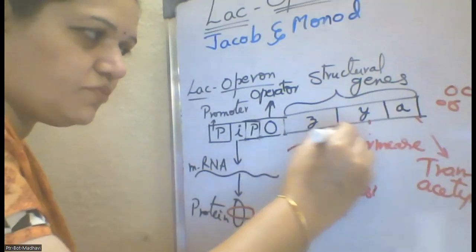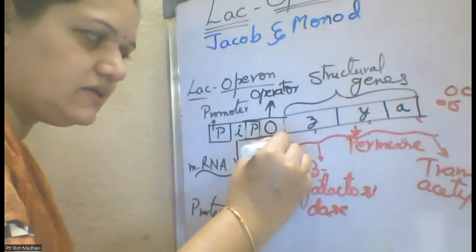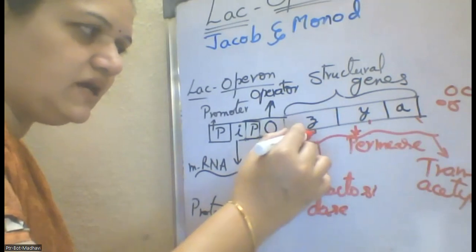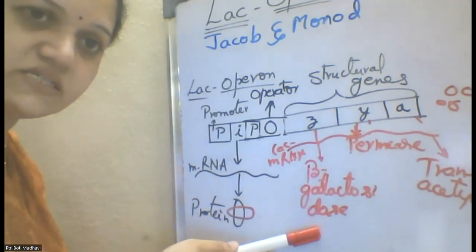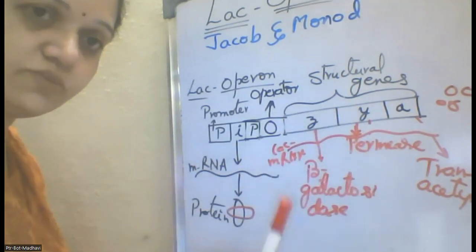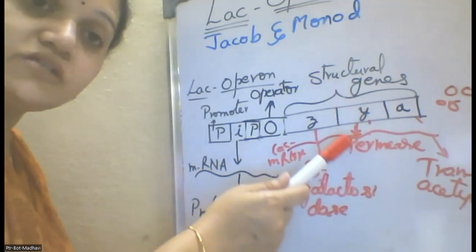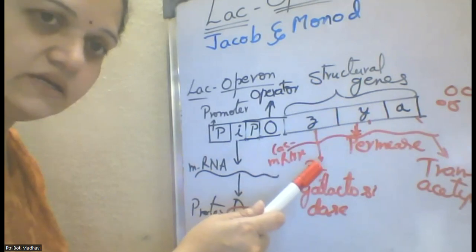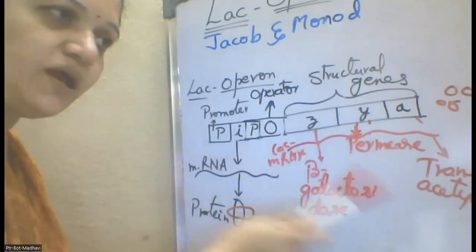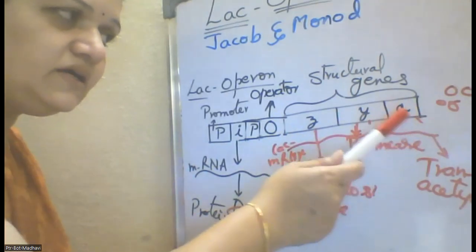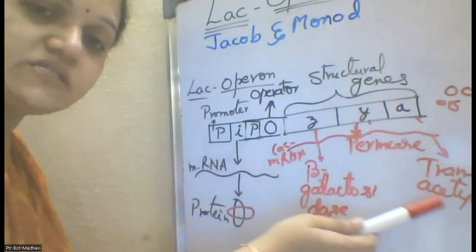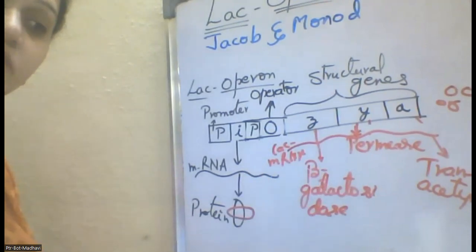Lac mRNA is formed through the transcription process. This lac mRNA will be synthesizing different enzymes. The structural gene Z synthesizes beta-galactosidase enzyme, which converts disaccharides into monosaccharides. The Y gene produces the permease enzyme — the permease enzyme functions are not yet fully clear, but it makes the disaccharides enter near the beta-galactosidase enzyme so that it can convert them into monosaccharides. And A is translated into the transacetylase enzyme, which converts complex compounds into simpler forms. Like this, the lac operon model is going to be switched on.